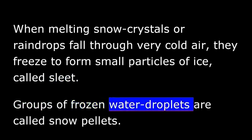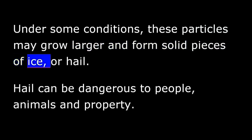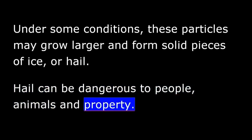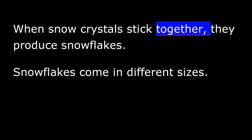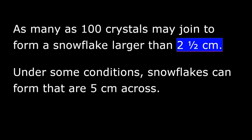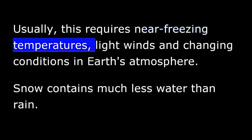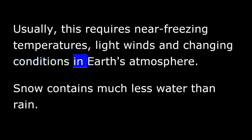Groups of frozen water droplets are called snow pellets. Under some conditions, these particles may grow larger and form solid pieces of ice, or hail. Hail can be dangerous to people, animals, and property. When snow crystals stick together, they produce snowflakes. Snowflakes come in different sizes. As many as 100 crystals may join to form a snowflake larger than 2½ centimeters. Under some conditions, snowflakes can form that are 5 centimeters across. Usually, this requires near freezing temperatures, light winds, and changing conditions in Earth's atmosphere.